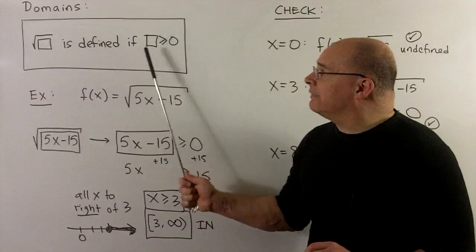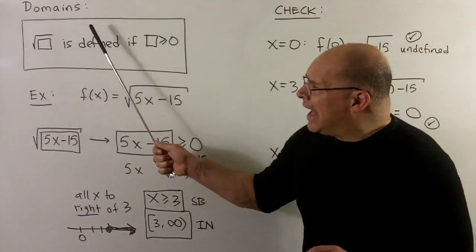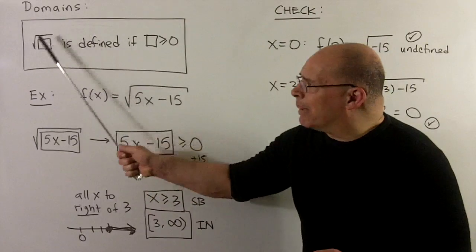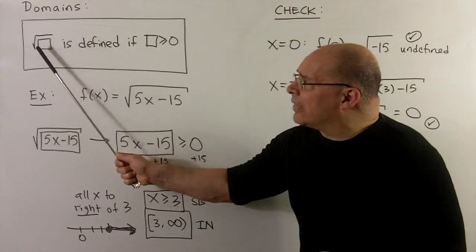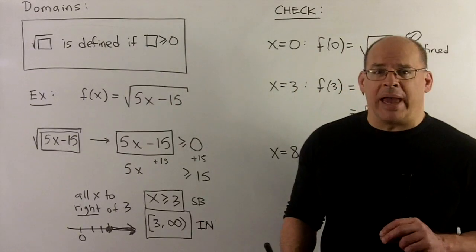square root of box is defined if box is greater than or equal to zero. So, we don't worry about how complicated what's inside the box is to get it out of the square root, greater than or equal to zero, and then we worry about doing algebra.